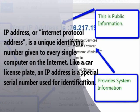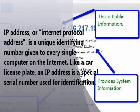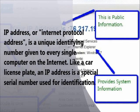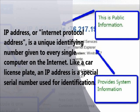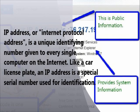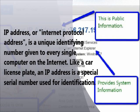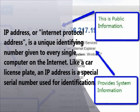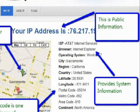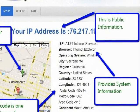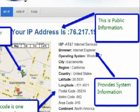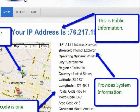IP address, or internet protocol address, is a unique identifying number given to every single computer on the internet. Like a car license plate, an IP address is a special serial number used for identification, and every machine connected to the internet has an IP address. Xbox games, cell phones, fax machines, and even soda pop dispensers have IP addresses. In every case, the IP address acts both like a car license plate and like a telephone number — it shows ownership, allows the machine to be located by other machines, and empowers authorities to track and protect people's safety.